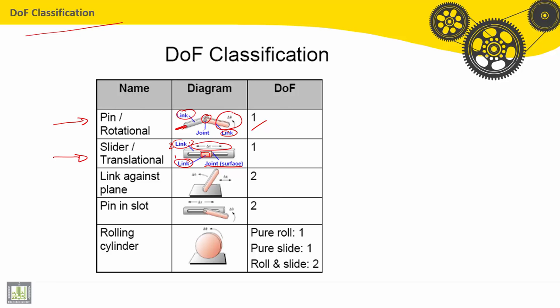Third type, link against plane. Here we have the plane. It is the ground. And here we have the link. This link can move linearly along delta x, or here as a rotation theta or delta theta. Then we find here 2 degrees of freedom: translation and rotation.